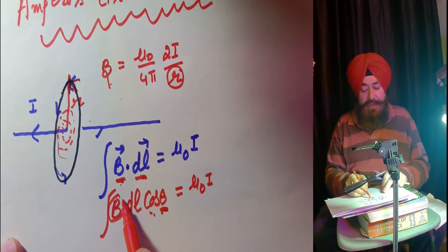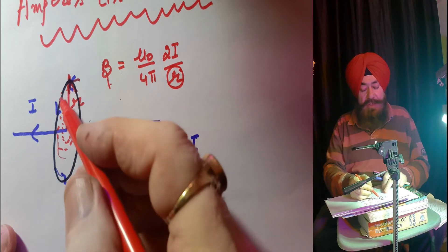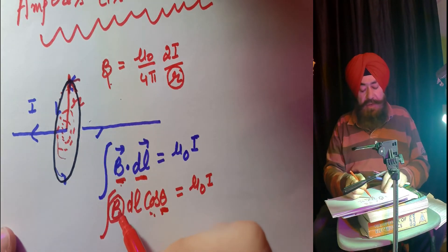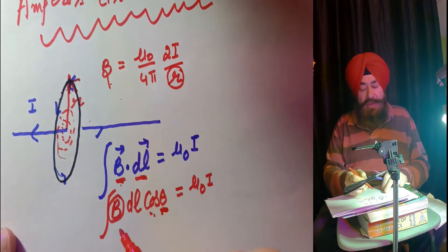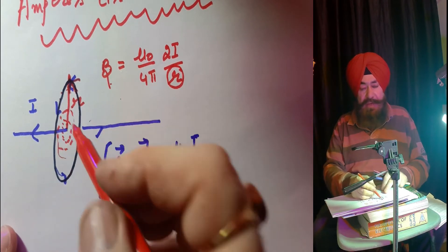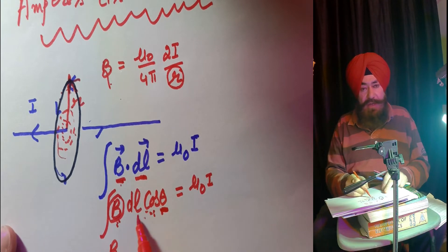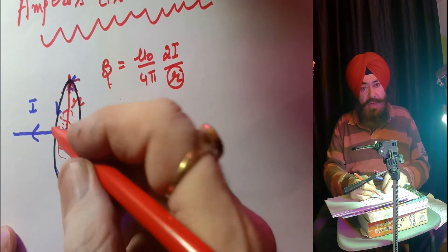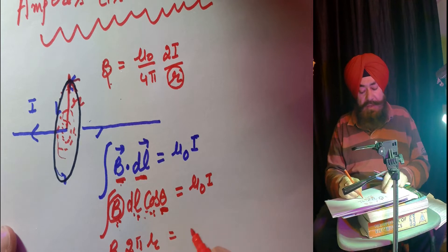And B is constant for this particular regular circular shape. If the ring is arbitrary in size, then you cannot take B outside the integration, because then B will vary. But here in my case, B is constant. So it becomes B·∫dl·cos0, and the integral of dl means the total length of the loop, which is 2πR.